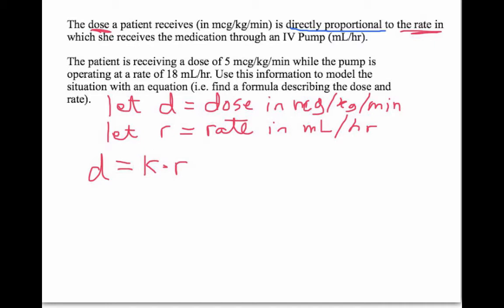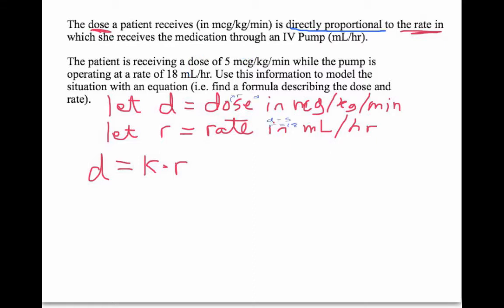The only way to know that for sure is if we know one instance of a relationship between D and R. Looking at this problem, at one particular time the patient is receiving a dose of 5 micrograms per kilogram per minute, and the pump at that time is operating at 18 milliliters per hour. That tells me that at one time, the dose is 5 and the rate is 18. Knowing that, I can plug D equals 5 and R equals 18 into this formula.